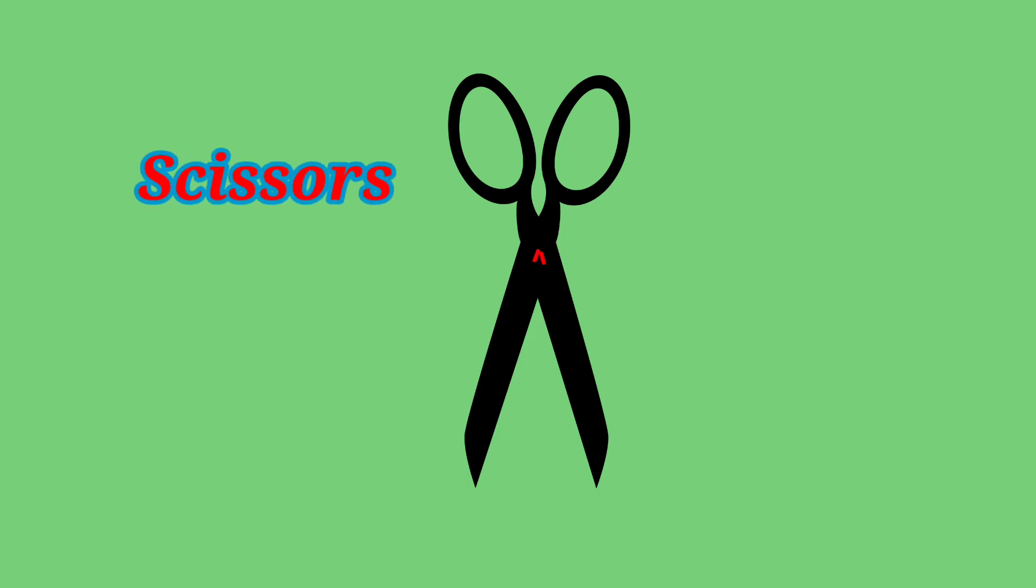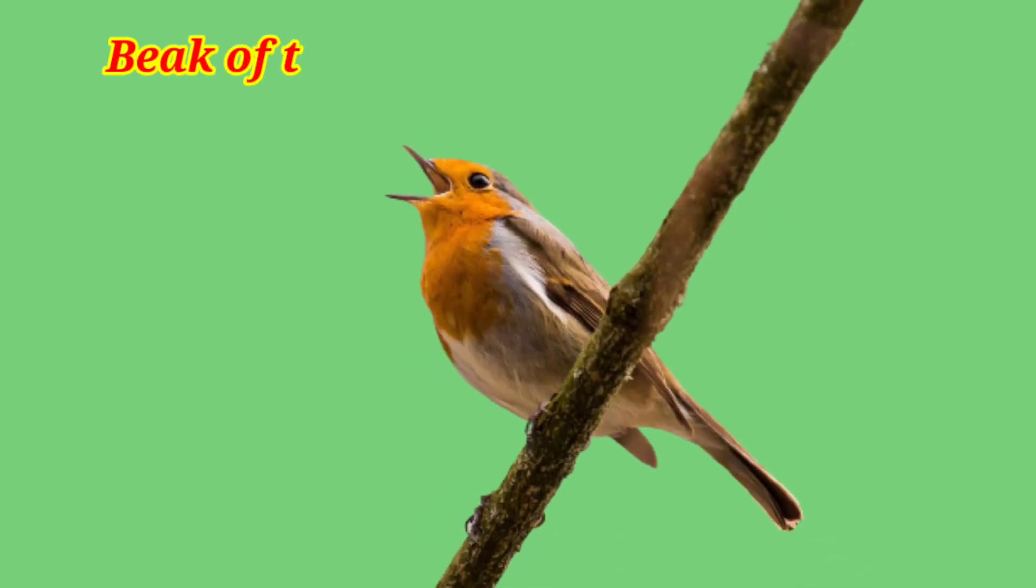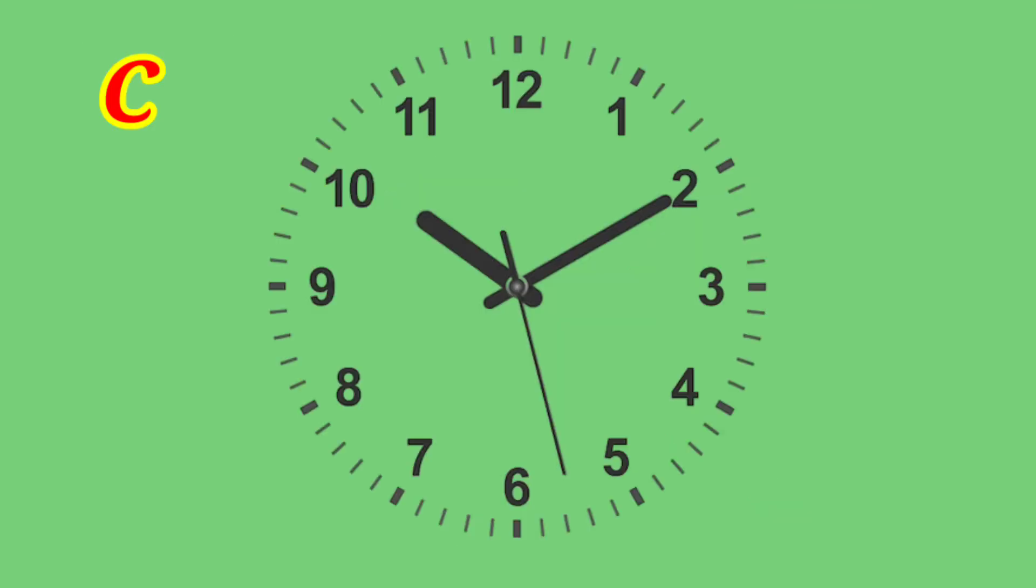You can see scissors and angle. You can see the beak of the bird, it has also angle. Clock. Clock also makes different types of angles.